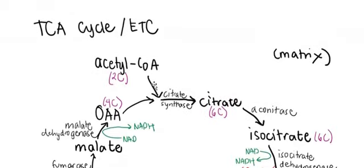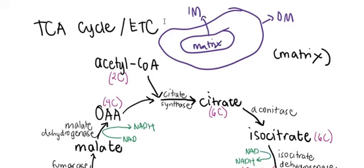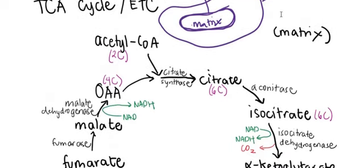Next, the tricarboxylic acid cycle (TCA or Krebs cycle), combined with the electron transport chain (ETC). These two are closely linked and both take place in the mitochondrion. Specifically, the Krebs cycle happens in the matrix, and the electron transport chain is on the inner membrane. Imagine the outer membrane, then the inner membrane — the inner portion is the matrix. The Krebs cycle happens in the matrix, and the ETC happens on the inner membrane, literally beside each other.